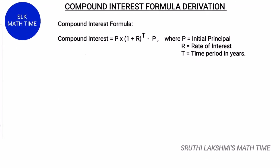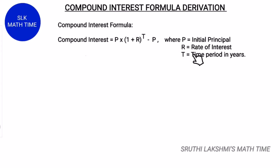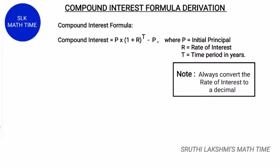The compound interest formula is P into 1 plus R the whole power T minus P. P is nothing but the initial principal, R is the rate of interest, and T is the time period in years. Always remember to convert the rate of interest to a decimal.